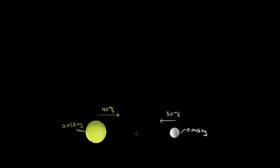Here's pretty much the fastest way you can solve one of these elastic collision problems when you don't know two of the velocities. In this case, we don't know the final velocities. We know the initial velocity of the tennis ball and its mass, we know the initial velocity of the golf ball and its mass, but we don't know the final velocities of either ball.